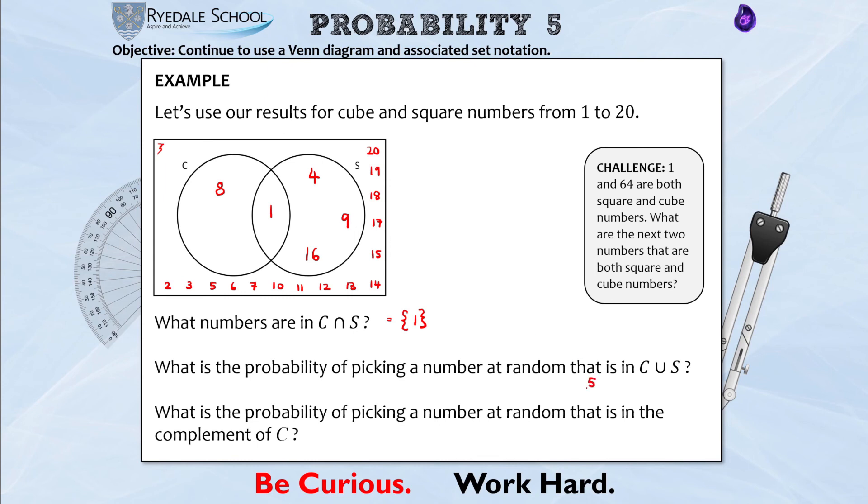So that is a probability of 5/20 which is one quarter. Finally it says what is the probability of picking a number at random that is in the complement of C? So that basically means a number that is not in C. Well I could count all of these up but it's a lot quicker to say well if there's two numbers in C, there are all the rest, there's 18 that are not in C. 18/20 is the same as nine tenths.